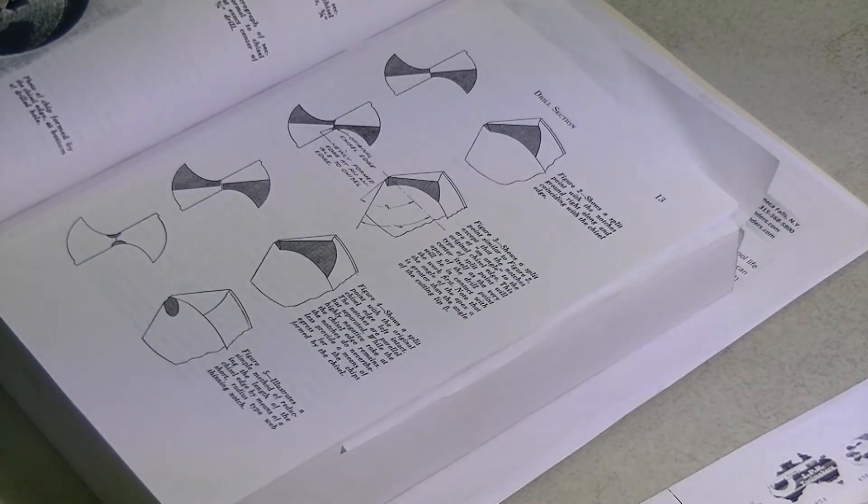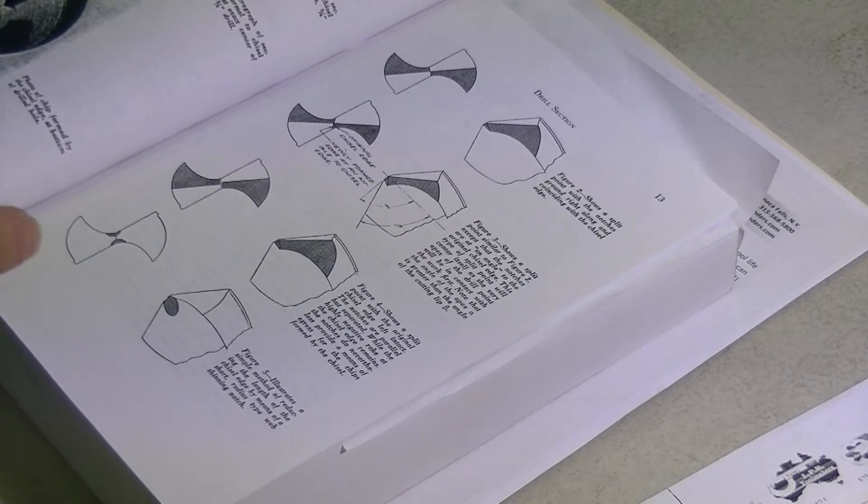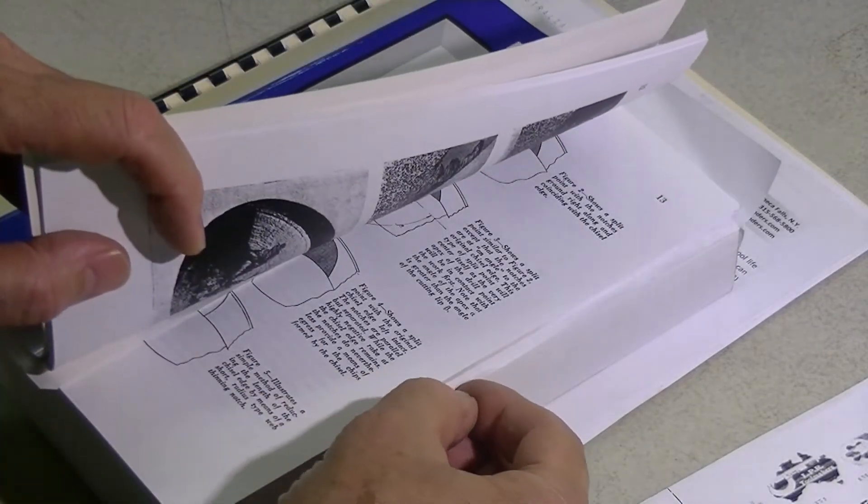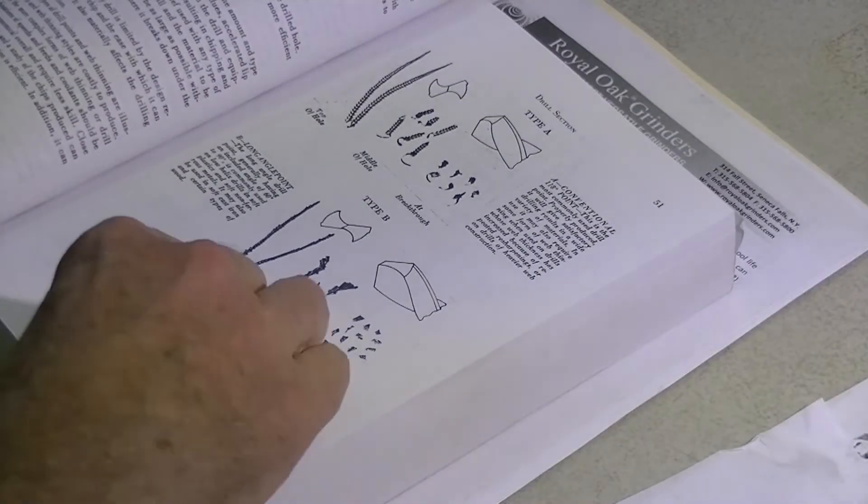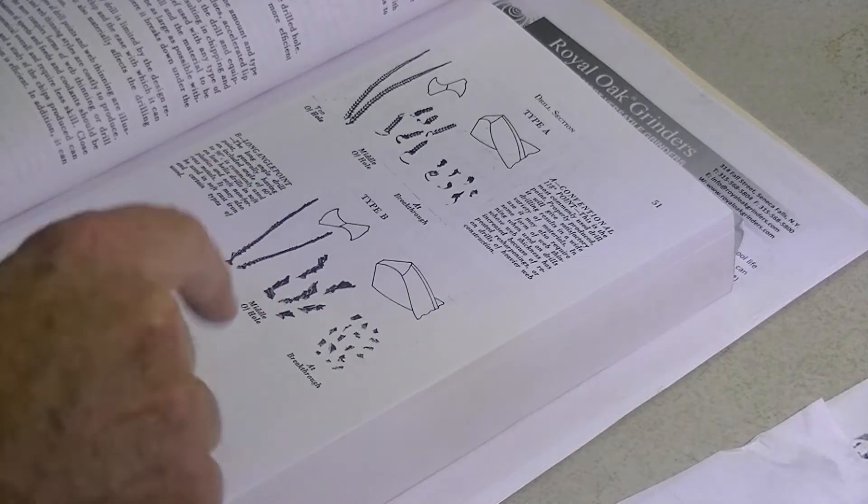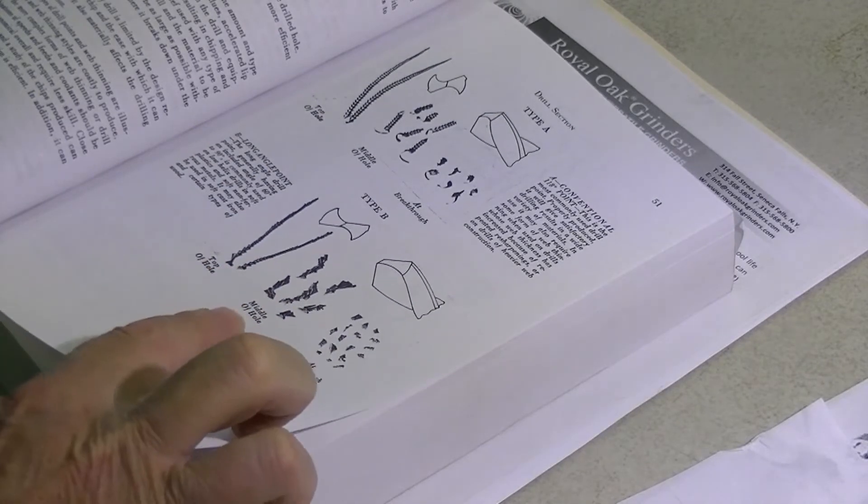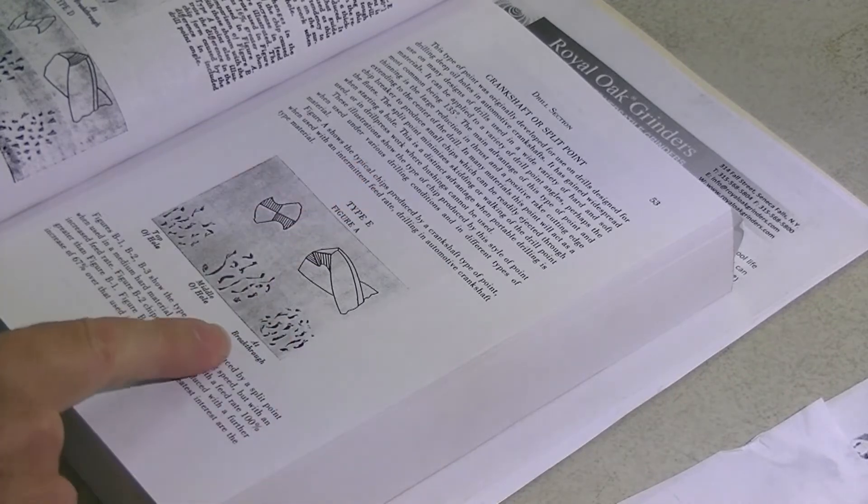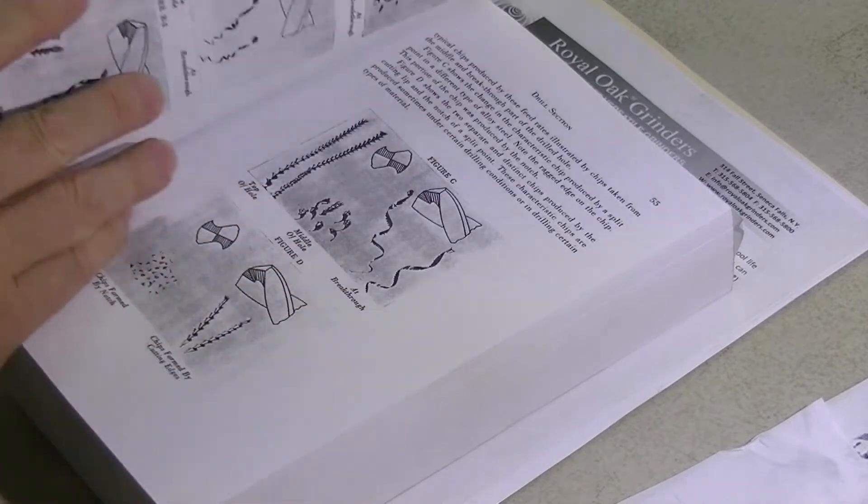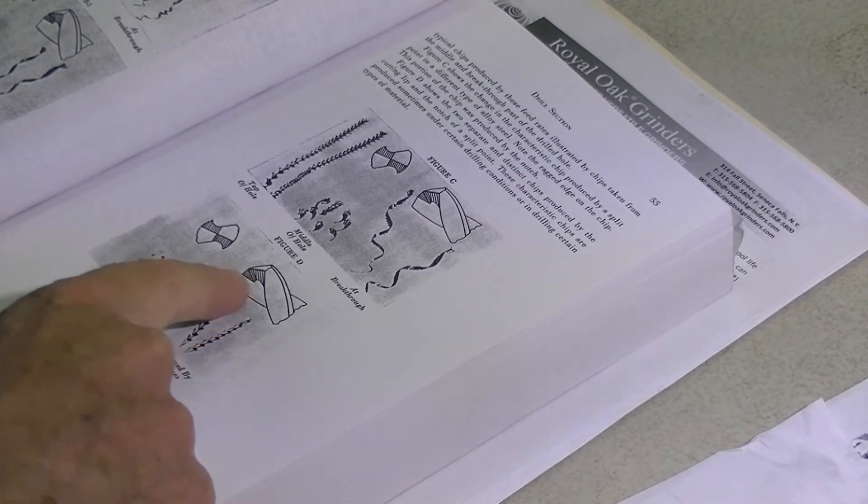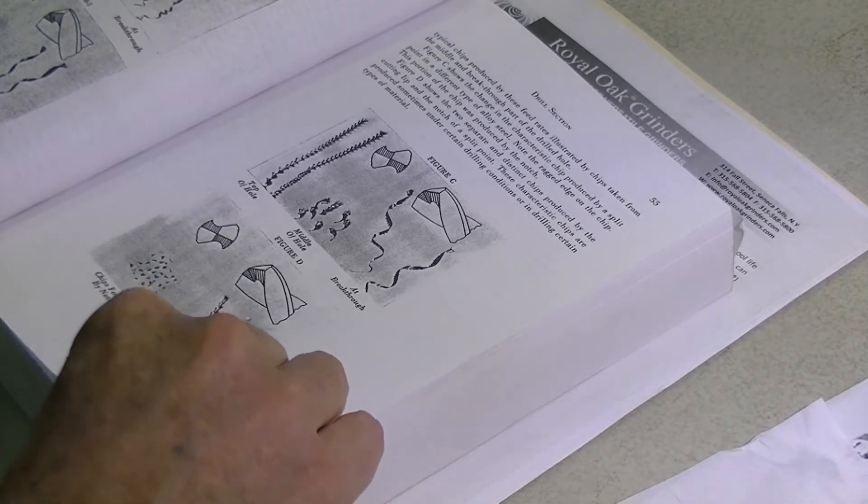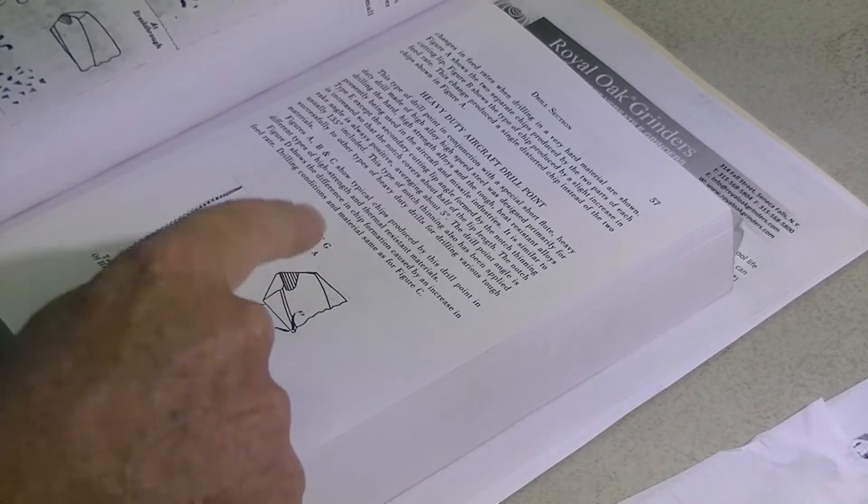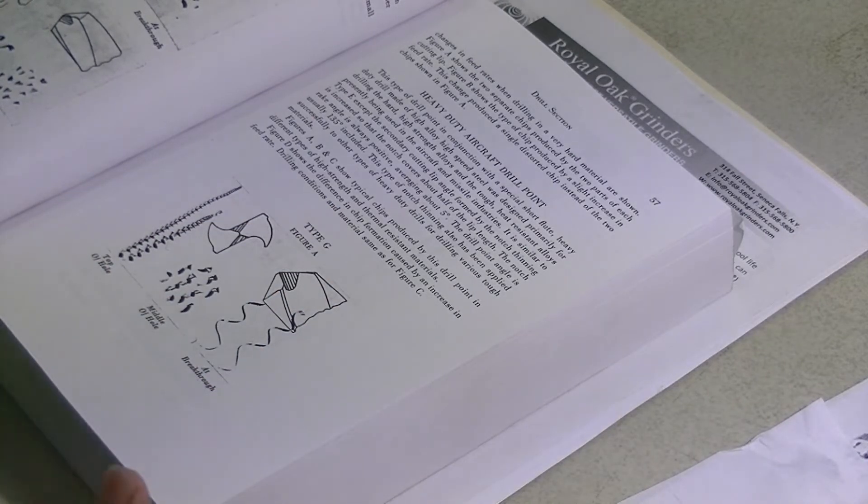But this is the sort of information you get here - how to split the point and thin the point for different operations, the effects of each individual job, the force changes in the cutting edge at the center. Different methods of grinding drills and the type of swarf you would expect coming off the drill, top of the hole, middle of the hole, at breakthrough. Different ways to grind the point - crankshaft or split point drills. Once again, the sort of swarf you would expect to come off it. Different types of web thinning and what sort of chips you would expect, and where you use these different grinds. Heavy-duty aircraft drill point and what you would expect the chips. A lot of good information.